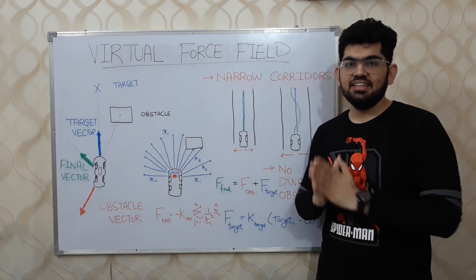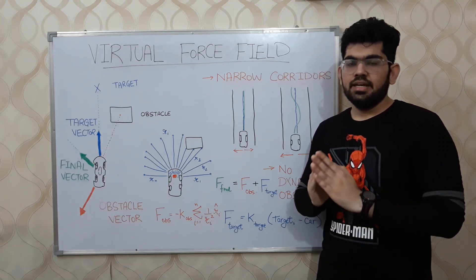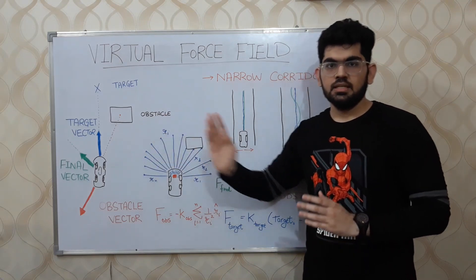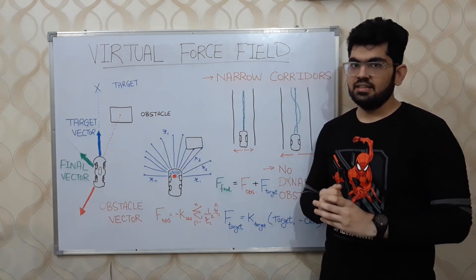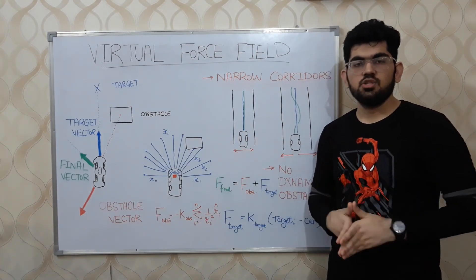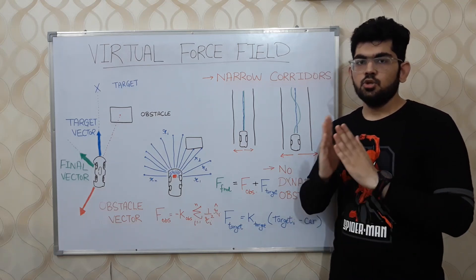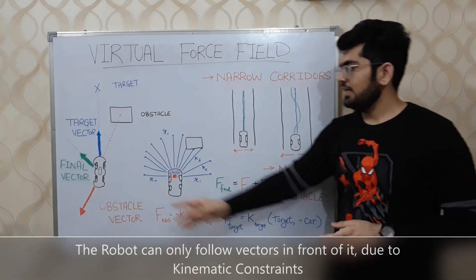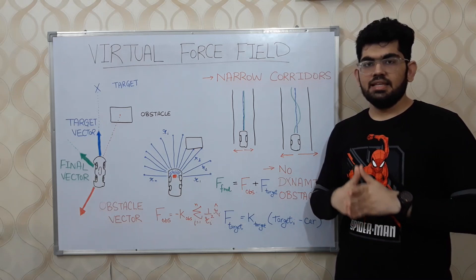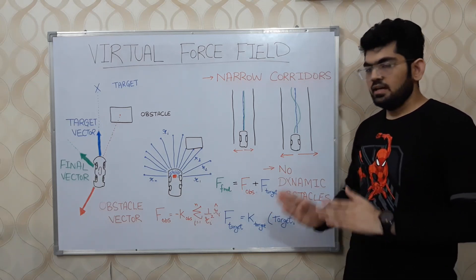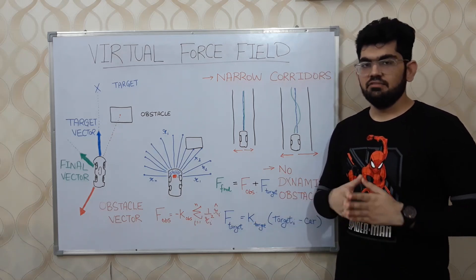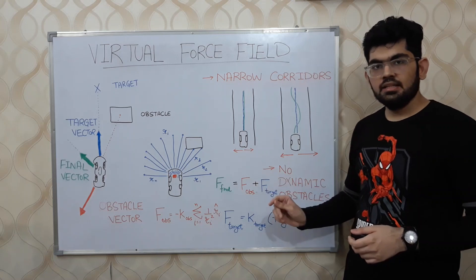Generating the target vector is relatively simple. All we have to do is subtract the car position from the target position — this automatically gives us a vector pointing from the car to the target. We may also apply some rotation-based operations to get the vector to point in front of the car. After all the calculations, we multiply the result by an appropriate constant to get the target vector. The final vector is simply given by the sum of the obstacle vector and the target vector.